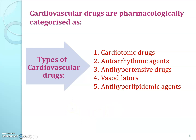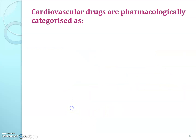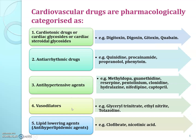Now see the detailed classification with examples. First, cardiotonic drugs, also known as cardiac glycosides or cardiac steroidal glycosides. Examples are digitoxin, digoxin, gitoxin, and ouabain. Second, anti-arrhythmic drugs — examples are quinidine, procainamide, propranolol, and phenytoin.